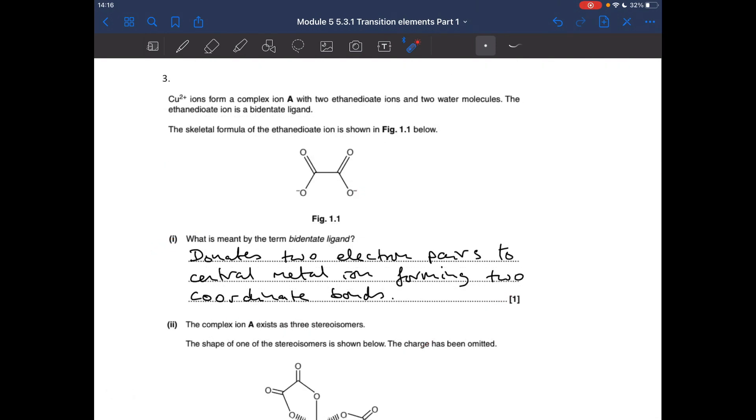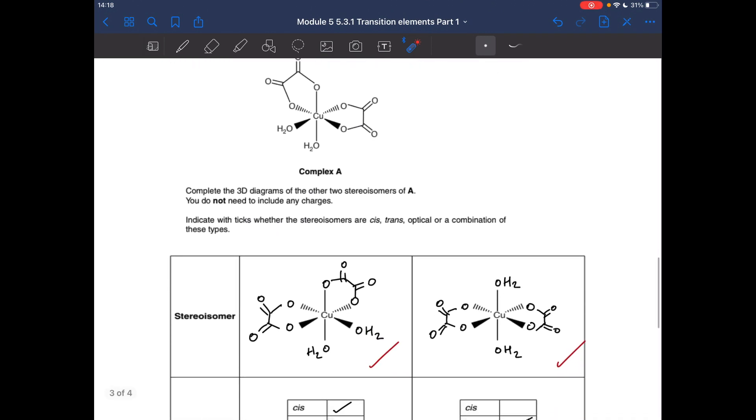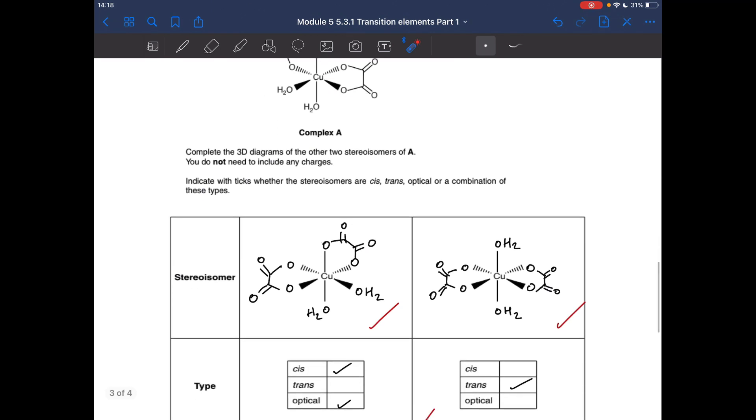First part of question three. What's meant by a bidentate ligand? It's a ligand that donates two electron pairs to a central metal ion, forming two coordinate bonds, or two dative covalent bonds. Next part, we've got to draw the two remaining 3D diagrams of the other stereoisomers of A.